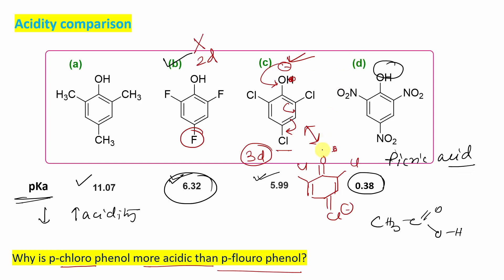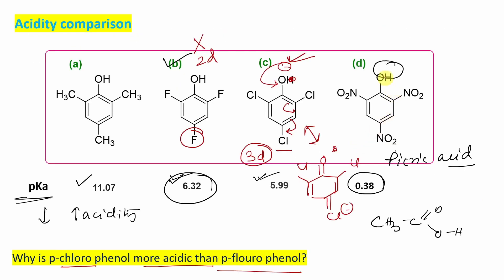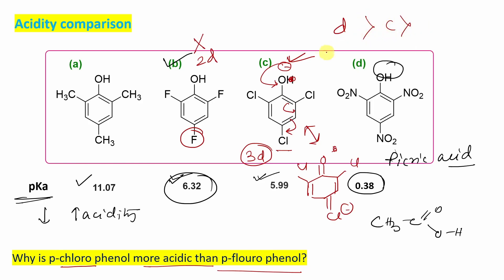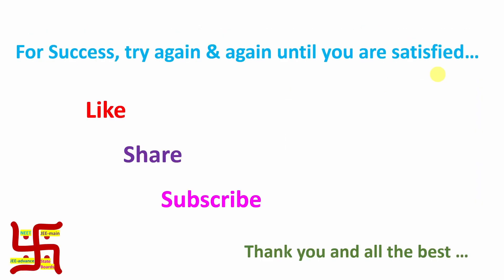So the order of acidity is: picric acid (option D) > trichlorophenol (option C) > trifluorophenol (option B) > trimethylphenol (option A). This is the order of acidity, and today's answer is picric acid. This is the end of the discussion. I believe this video may be useful. Thanks for watching. See you in my next video. Bye-bye.